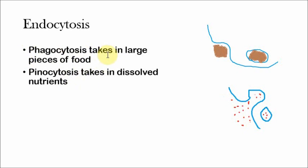Phagocytosis is basically the cell's way of eating. It takes in large pieces of food, stuff that's not dissolved. Maybe it's broken down pieces of other cells. There are different types, but phagocytosis takes in very large pieces of food.